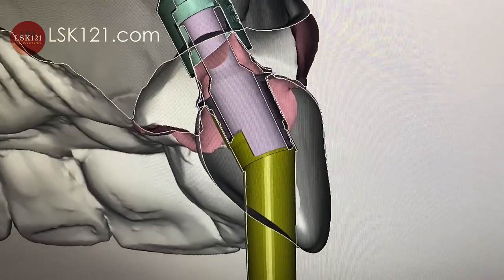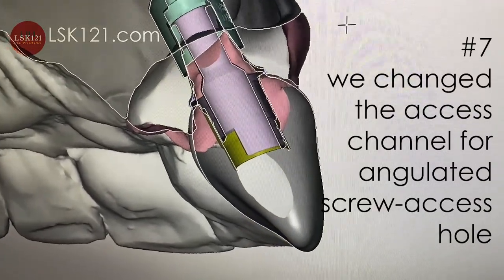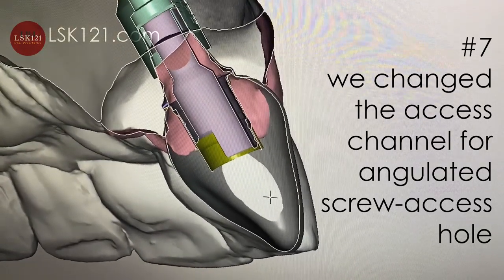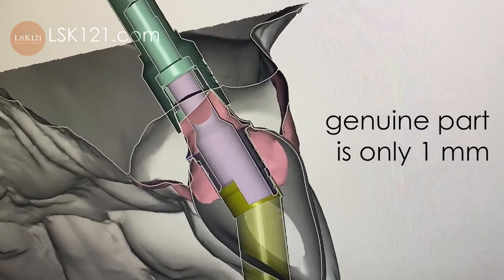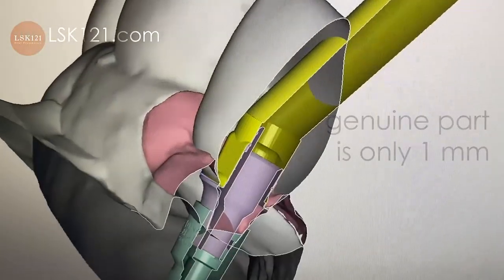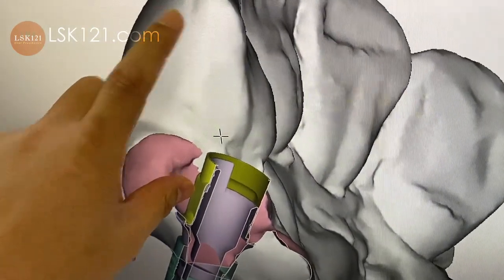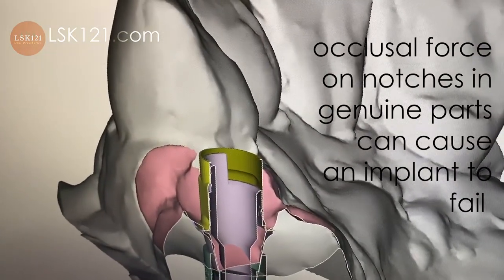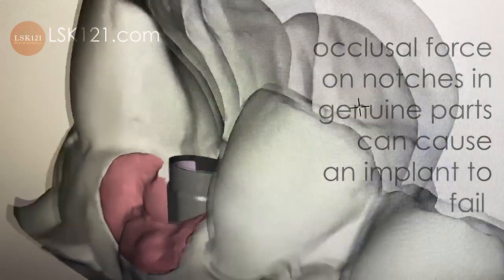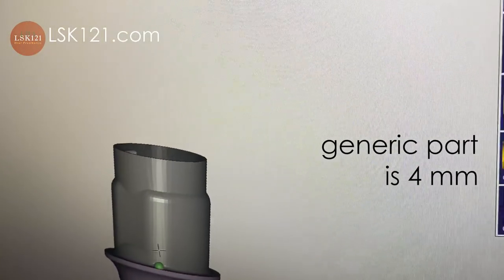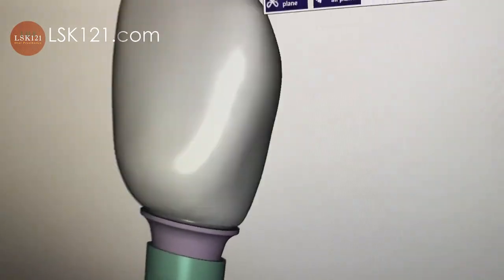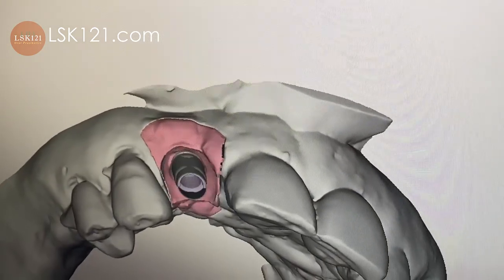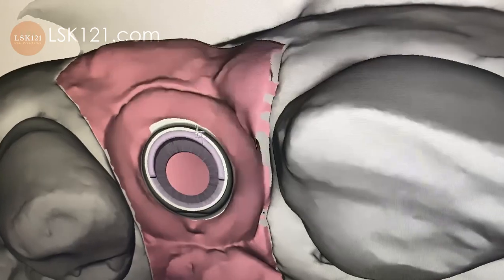Number seven, we changed the access channels — the angulated screw access hole. The genuine part is only one millimeter with a notch. The problem is we have to build the entire tooth, and even with the notch, sometimes occlusion forces cause implant failure. So what we use is a printed generic implant type and then we design it correctly with AxoCAD. Then we put more tissue contour, which the doctor is a little worried about.